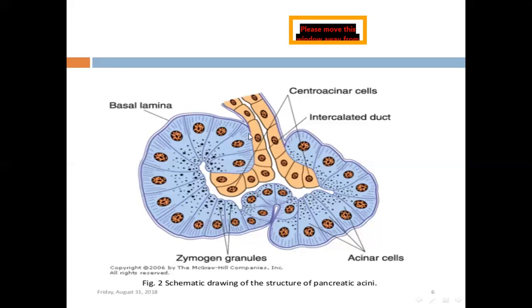The ductal part of the exocrine pancreas begins within the center of the acinus, starting with the central acinar cells. Central acinar cells are composed of pale cells, followed by the intercalated duct, which is also pale low cuboidal.